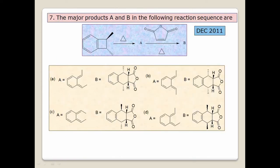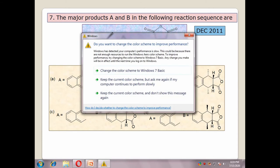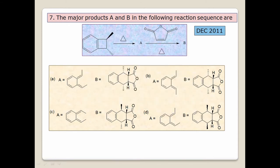Question number seven — discussed in video number 1 on electrocyclization. First observe the molecule and how the groups are arranged. Here you see a cyclobutene ring. Opening of the cyclobutene ring — how many electrons? It is a 4π electron system.